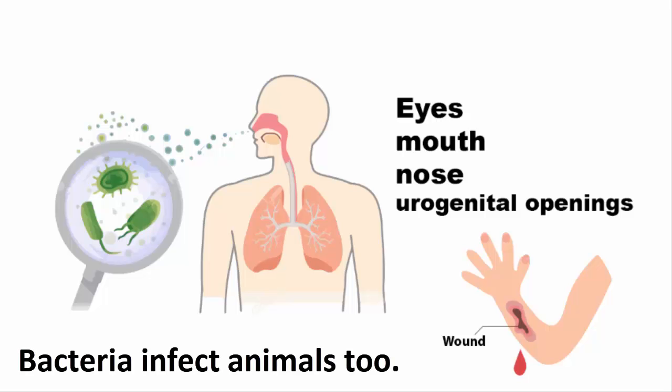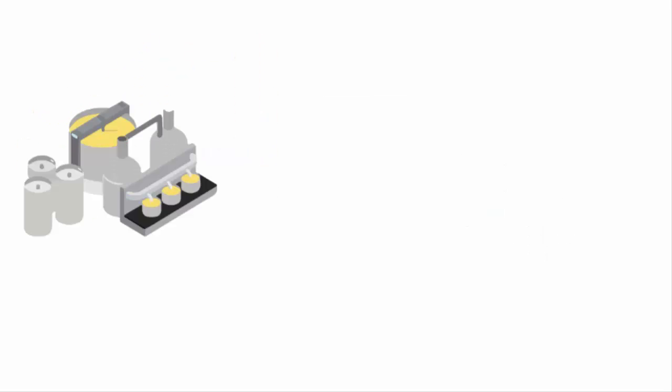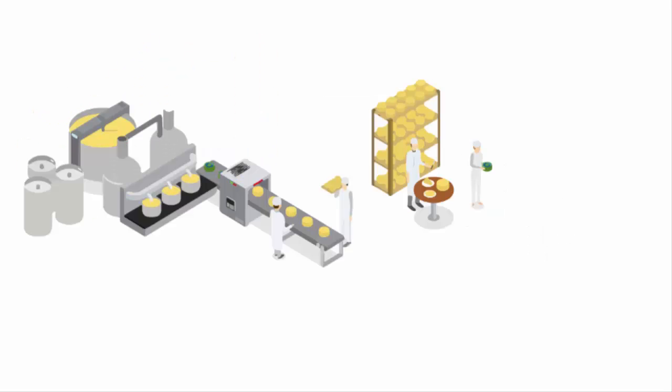In the same way, bacteria infect animals too. When humans consume the meat of an infected animal, the bacteria get further transmitted to humans through the food supply. The meat and food industry are vulnerable to a variety of infectious diseases during food processing stages, mainly due to poor personal hygiene and poor processing sanitation practices, which in turn can develop the growth of bacteria, viruses, molds, and yeasts.